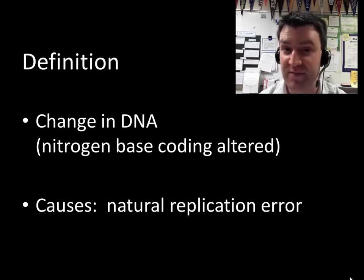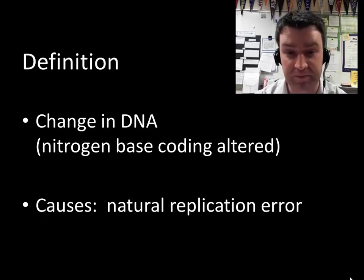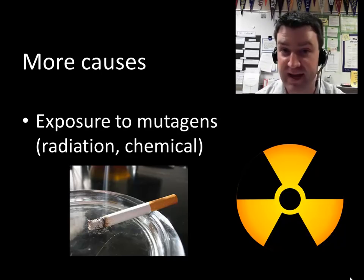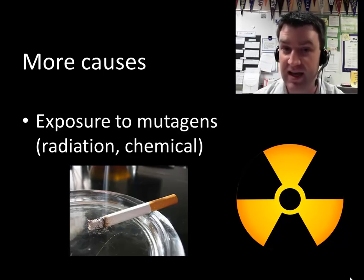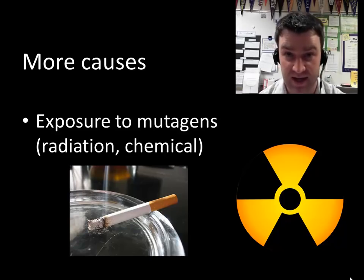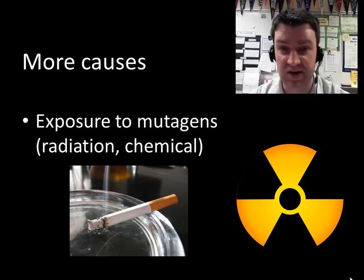Many organisms have proofreading proteins to try and correct those errors and reduce the error rate, but the error rate is not zero. There are also environmental factors that can damage DNA and increase the rate of mutation. Those come in two broad forms: radiation from high-energy waves like gamma rays and X-rays can damage DNA, and so can chemical sources like the chemicals in cigarettes.